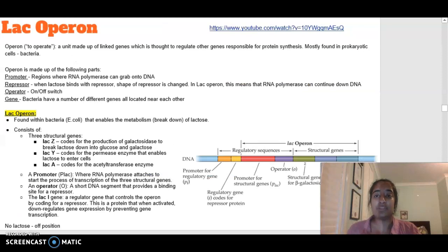The next major part is understanding the lac operon. Before we talk about the lac operon, I want to talk about operons in general. The word operon means to operate. It's basically a unit that's made up of various genes, and they are linked together. They have similar functions which are thought to regulate other genes that are responsible for the synthesis of a protein. They're mostly found in prokaryotic cells and they're made up of a promoter, a repressor, an operator, and a gene.